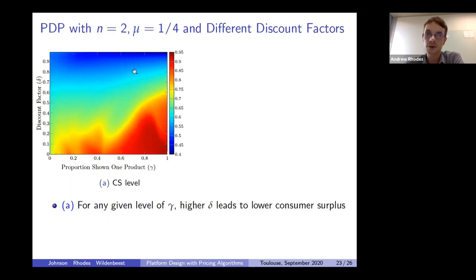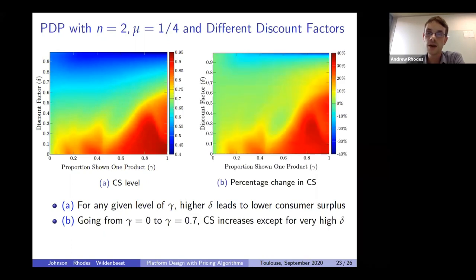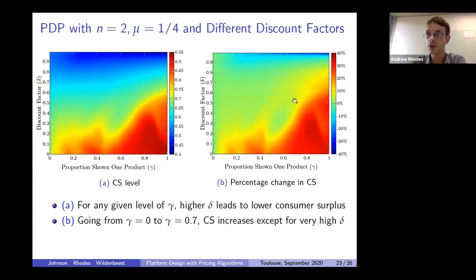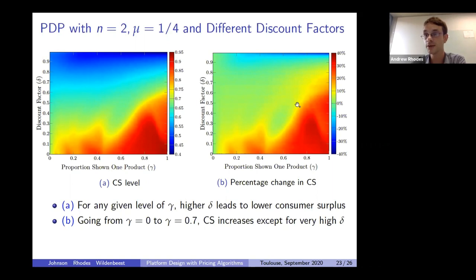We also look at the percentage change in consumer surplus due to the intervention. For example, fixing Delta at 0.5 and looking at gamma equals 0.7, this point shows the percentage change in consumer surplus going from no intervention (gamma=0) up to gamma=0.7. Dark red means consumer surplus is going up by a lot; green means not changing much; blue means it's decreasing. Taking a slice at gamma equals 0.7: in markets where the discount factor is quite low — proxying for competitive markets — this intervention works very well. But it can work quite badly when Delta is very high, which we take as a proxy for a cartelized market. This is qualitatively consistent with the theory discussed earlier.